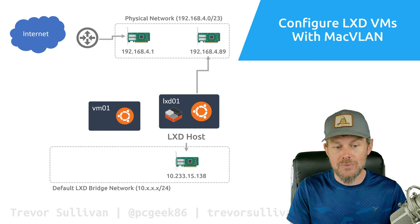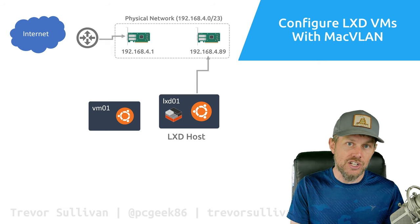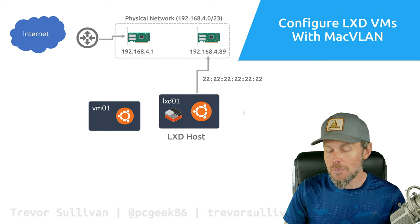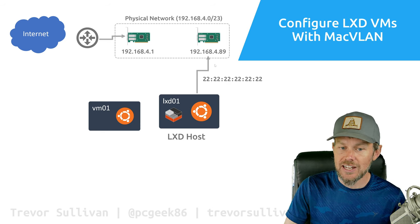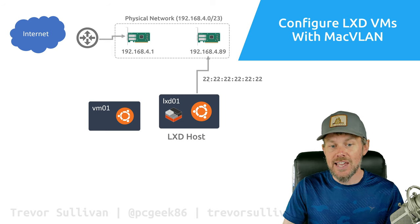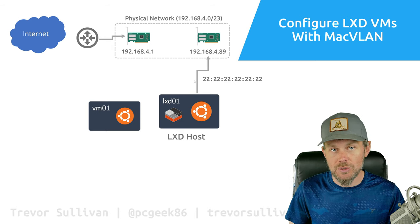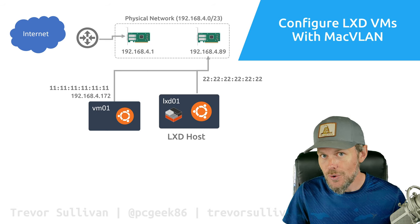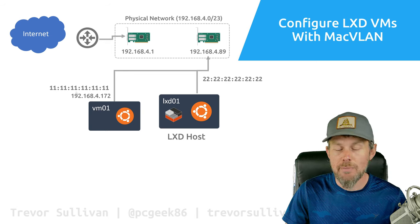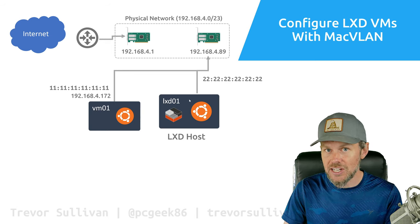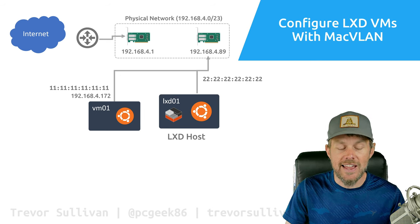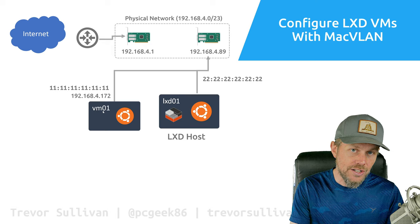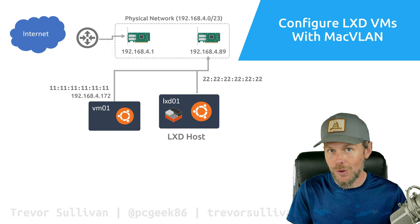Let's talk about how MacVLAN works. We eliminate the concept of the bridge network, and instead connect our virtual machine directly to our physical network. When the LXD host attaches its physical network adapter to the network, it has a MAC address that uniquely identifies that interface. With MacVLAN, we can give a unique MAC address to the same network interface on the LXD host, and assign that secondary MAC address to the virtual machine running on the LXD host — effectively connecting that virtual machine directly to the physical network through the same physical network interface.